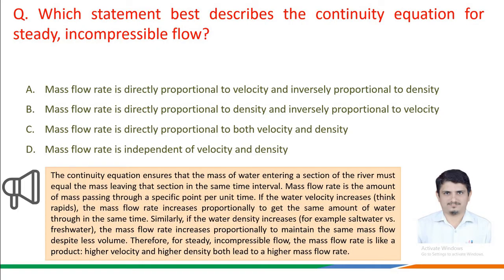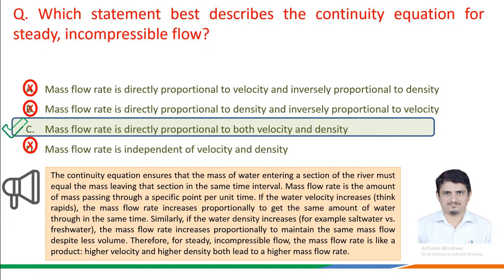Please recall: the continuity equation ensures that the mass of fluid entering a section must equal the mass leaving in the same time interval. Mass flow rate is the amount of mass passing through a specific point per unit time. If velocity increases, the mass flow rate increases proportionally. Similarly, if density increases, the mass flow rate increases proportionally to maintain the same mass flow despite less volume. Therefore, for steady incompressible flow, higher velocity and higher density both lead to a higher mass flow rate. The correct answer is option C: mass flow rate is directly proportional to both velocity and density.